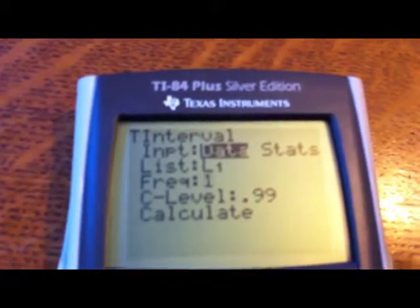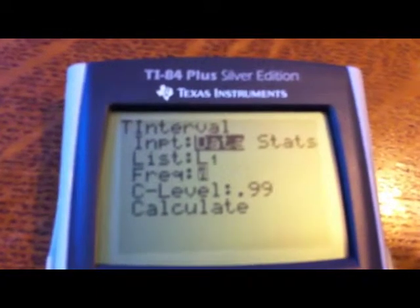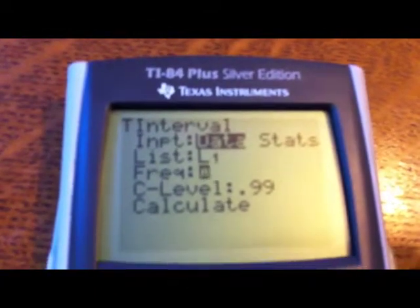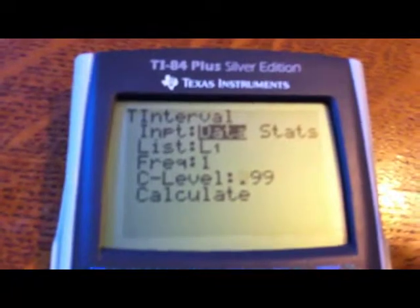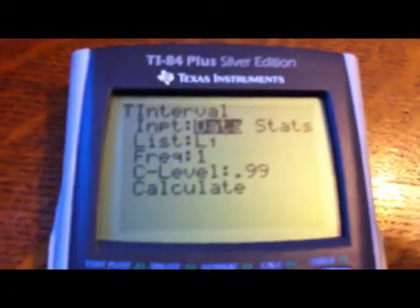And what that means is that I've observed everything that I put in once. So that's where we want to leave that. And then confidence levels. So for our example, what did we do? We did a 99%, so currently that is at 99%, so I can leave it.